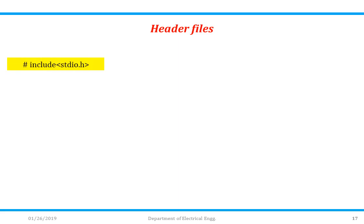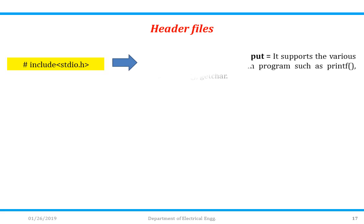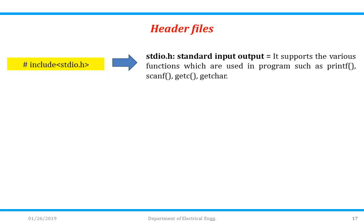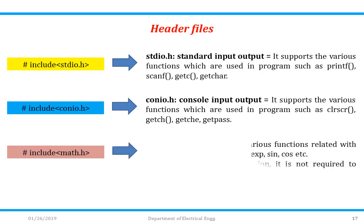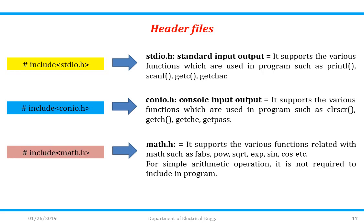The first header file is #include stdio.h, where std stands for standard and io is input/output. It supports functions like printf, scanf, getc, and others. Next is #include math.h, which supports mathematical functions such as absolute value (fabs), power, square root (sqrt), exponential (exp), and trigonometric functions like sin and cos. For simple arithmetic operations, it is not required to include math.h.